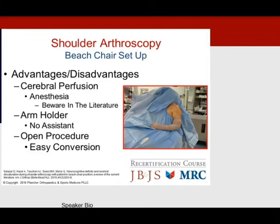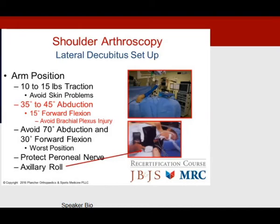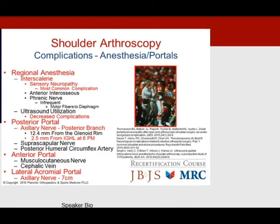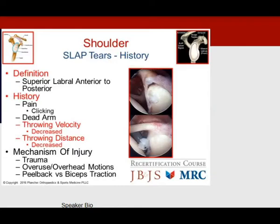In the beach chair position, be aware that cerebral perfusion may be decreased, but open procedures are easily performed. In the lateral decubitus position, 35 to 45 degrees of abduction with 15 degrees of forward flexion avoids brachial plexus injury; always protect the peroneal nerve on the lower leg and place the axillary roll. Regarding complications: the most common in regional anesthesia is sensory neuropathy from an interscalene block. Place the posterior portal carefully to avoid the axillary nerve, the anterior portal to avoid the musculocutaneous nerve, and be mindful of the lateral acromial portal at 3 to 7 centimeters.